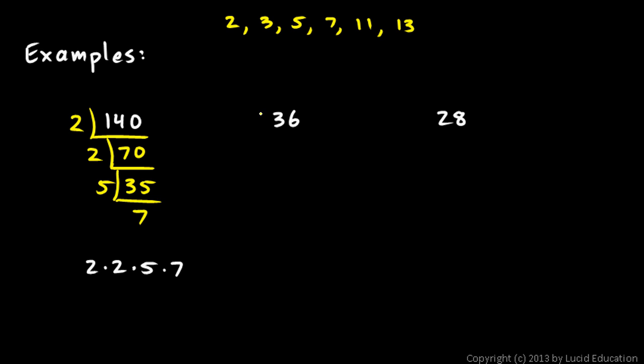Okay, 36. Again, we start with 2. 36 is 2 times 18. 18 is divisible by 2. It's 2 times 9. And then 9 is easy. It's not divisible by 2, but it's 3 times 3. And 3 is prime. So we're done there. And these numbers give us our answer. 2 times 2 times 3 times 3.